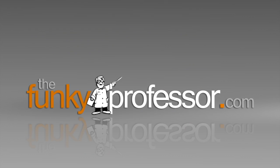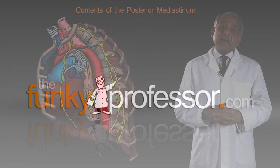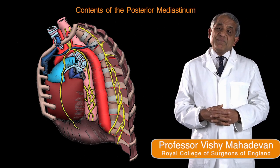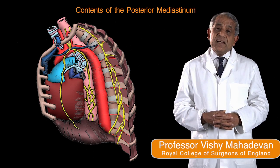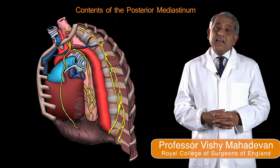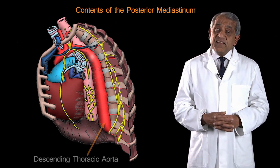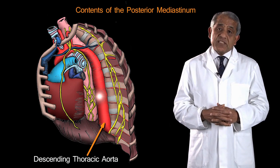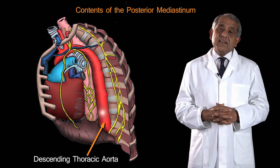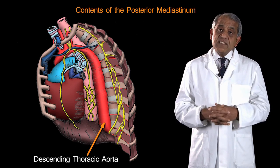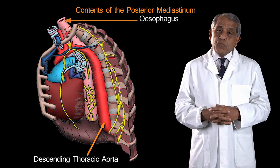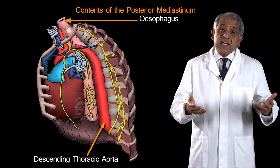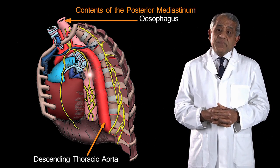Now, for the posterior mediastinum — the area behind the fibrous pericardium — the important structures here are the descending thoracic aorta, which is the continuation of the aortic arch, and the esophagus, which after leaving the superior mediastinum enters the posterior mediastinum.